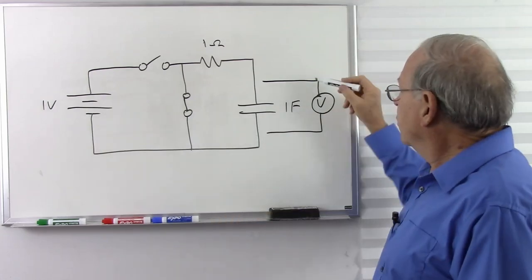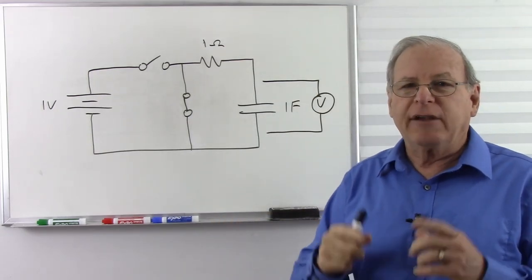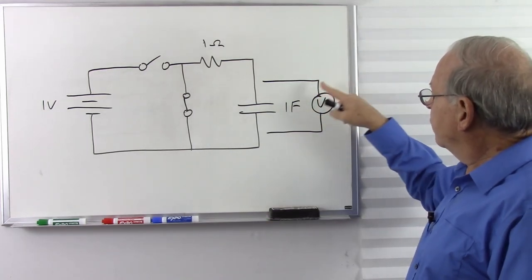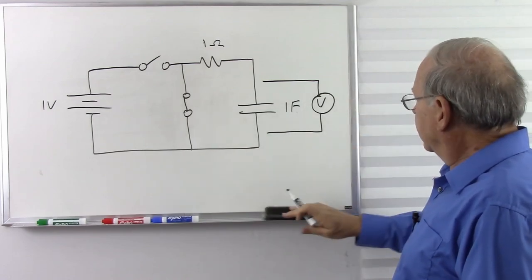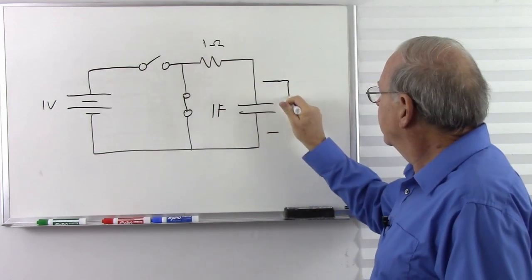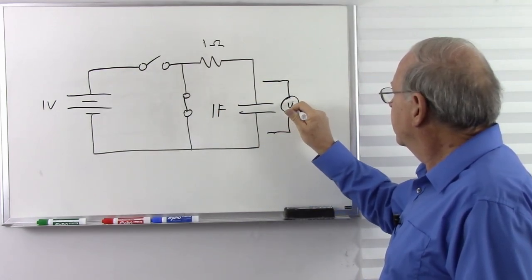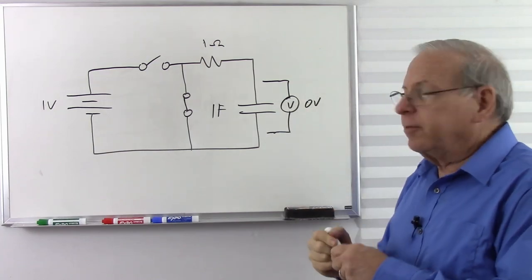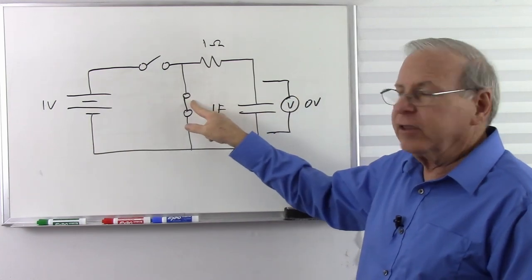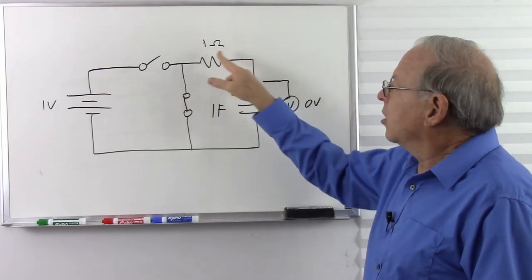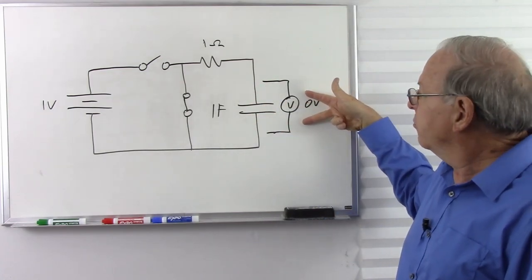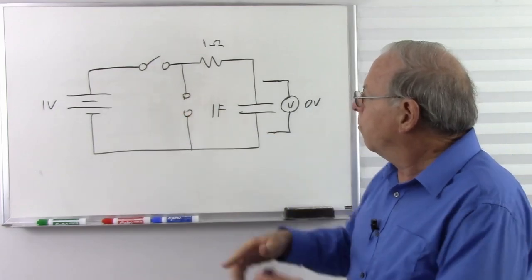We put a voltmeter across the capacitor and wait until it reads zero volts — meaning the voltage on both sides of the capacitor is equal. Remember, a voltmeter is a type of pressure gauge: it tells us the difference between two voltages. When it reads zero, we're at a good starting point. Now we open the discharge switch so the capacitor will hold whatever charge we put in.